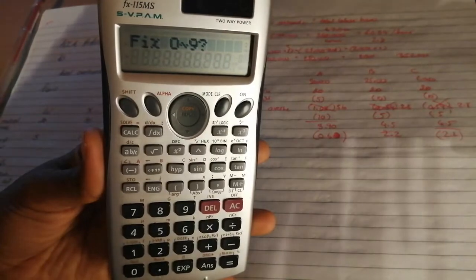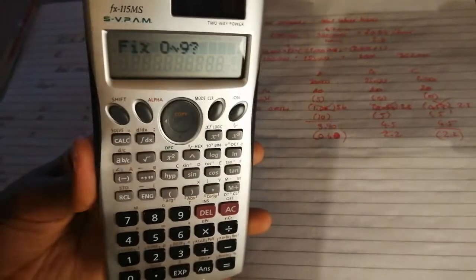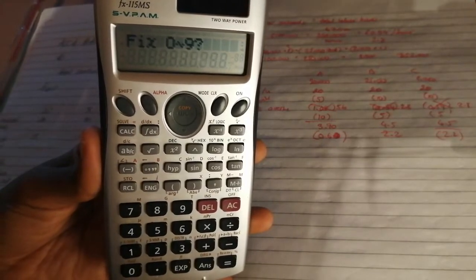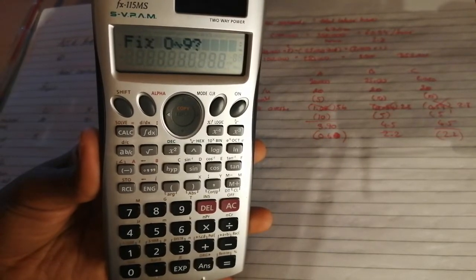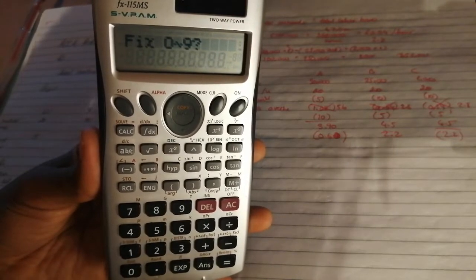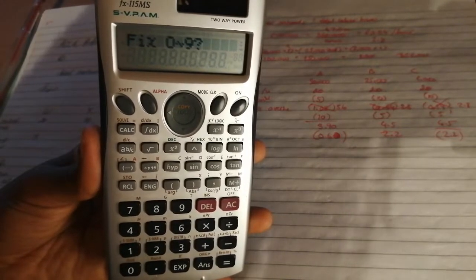For most things, having three decimal places is good because if you're calculating money, then you're going to want two decimal places and you want to make that decision yourself about the third, how you're going to round it. Do you want to round up or do you want to round down? So I like it on three.